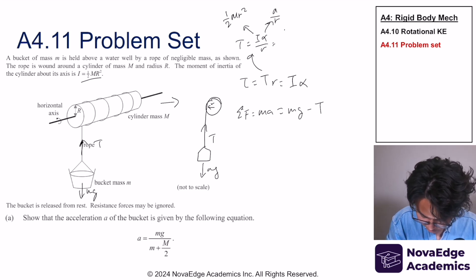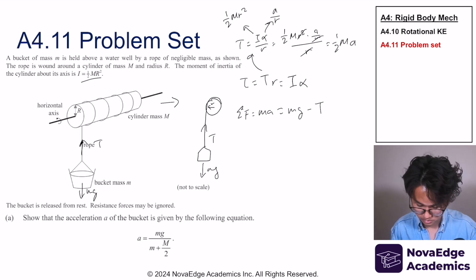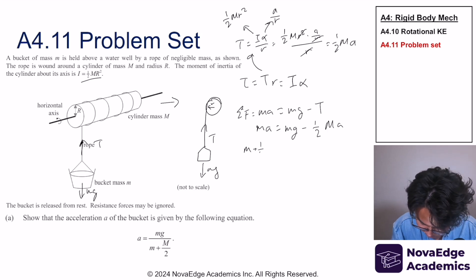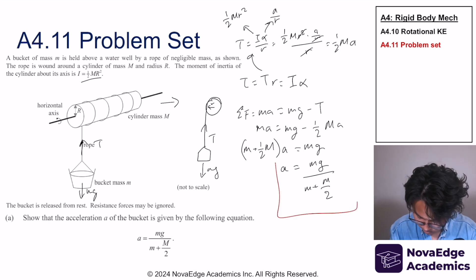If I were to combine this, I get 1/2 mr² times a/r divided by r. So the r's are going to cancel out and we get 1/2 ma. So let's plug those in. We get that ma is equal to mg minus 1/2 ma. If I were to isolate the m, I get that m plus 1/2 a is equal to mg. So acceleration is equal to mg divided by m plus m/2.